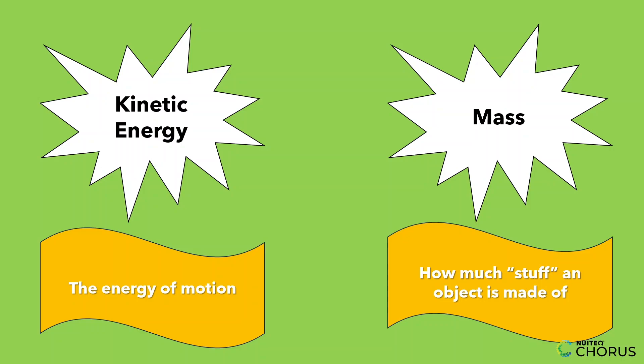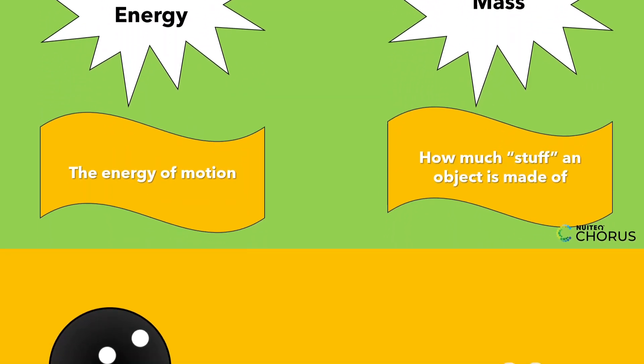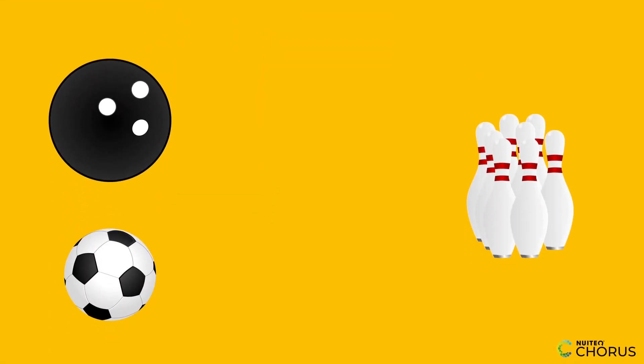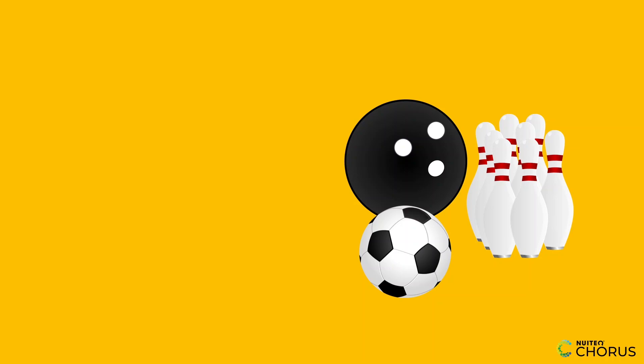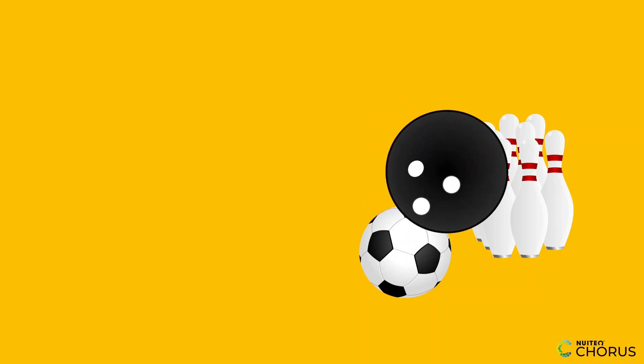Think about a bowling ball and a soccer ball. If both roll at the same speed, which one causes more impact? The bowling ball. That's because it has more mass, which gives it more kinetic energy.